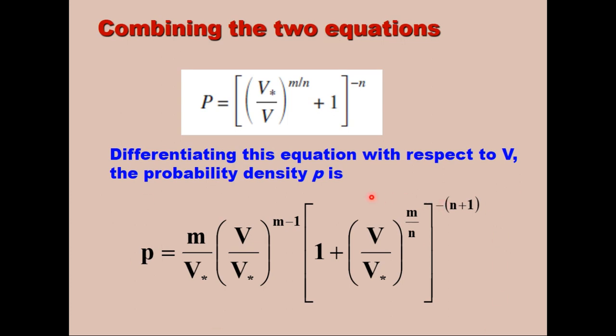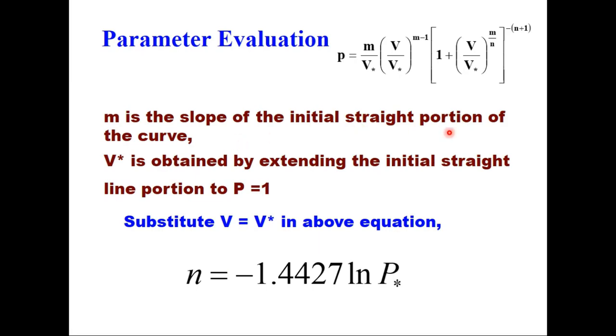This equation has three parameters: m, V star and n. A normal distribution has only two parameters, mean and standard deviation. Therefore, this distribution is more flexible than a normal distribution. These parameters are estimated like this: the slope m is the slope of the initial straight portion of the curve. V star is obtained by extending the initial straight line portion to P equals 1. When you substitute V equals V star in this equation, you get the value of n as minus 1.4427 log of P star. That is how three parameters are estimated: m, V star and n.